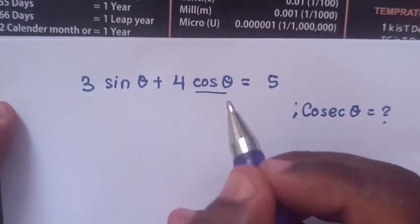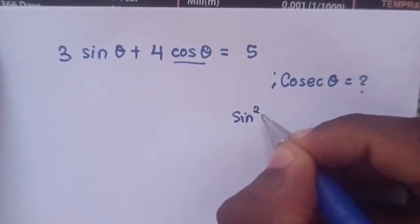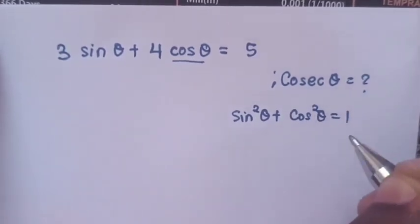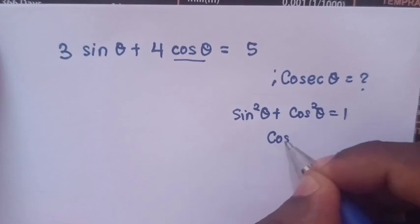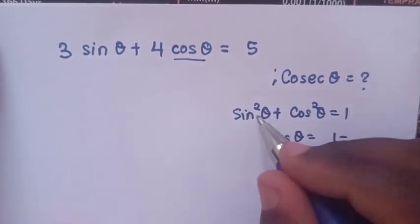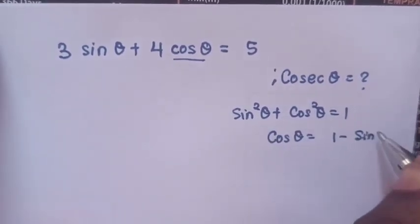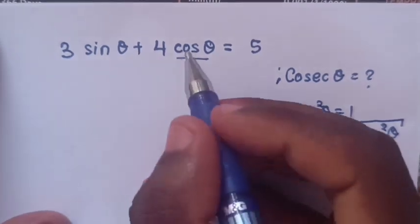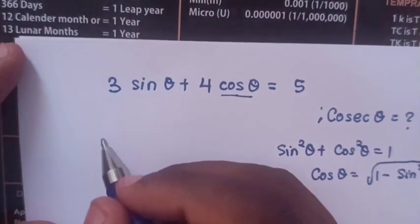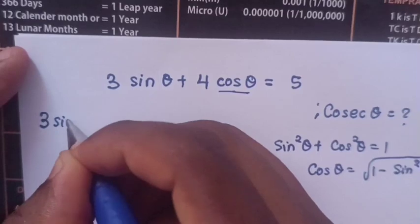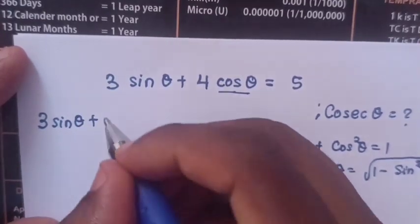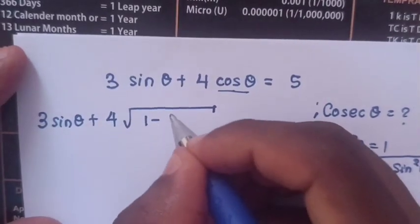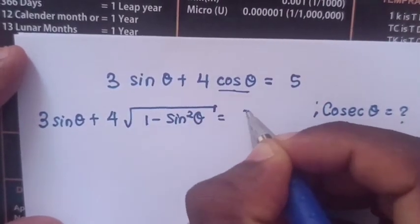First, to express cos θ, we apply the rule that sin²θ + cos²θ = 1, so cos θ = √(1 − sin²θ). We substitute this value of cos θ into the equation, giving us 3 sin θ + 4√(1 − sin²θ) = 5.